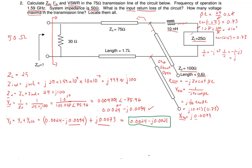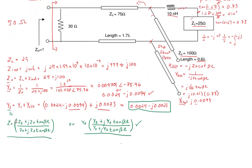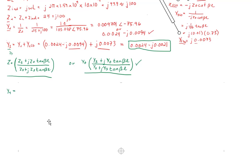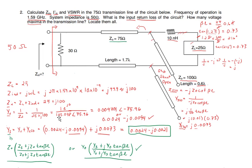Now we're ready to add the transmission line. We have two options: convert Y3 to Z3 and use the Z-based formula, or stay with Y3 and use the admittance-based formula. Since we're already at admittance we'll use that. For the transmission line, Y0 = 1/Z0 = 1/75.